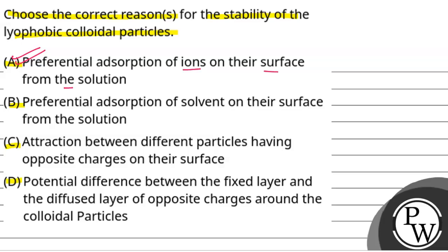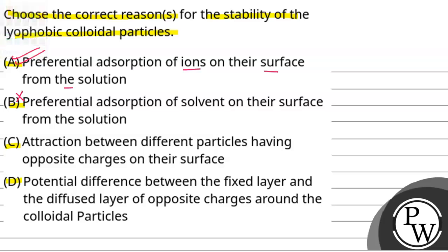Option B is preferential adsorption of solvents on their surface from the solution. This means that solvent is adsorbed on the surface. This option is incorrect, because it is ions, not solvent, that are adsorbed on the surface. So option B is incorrect.